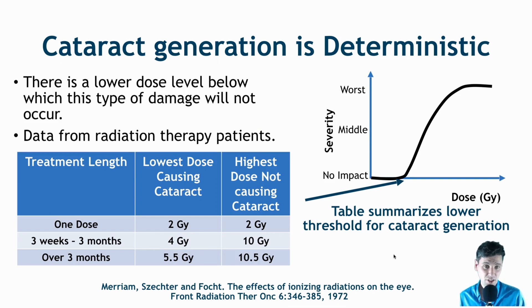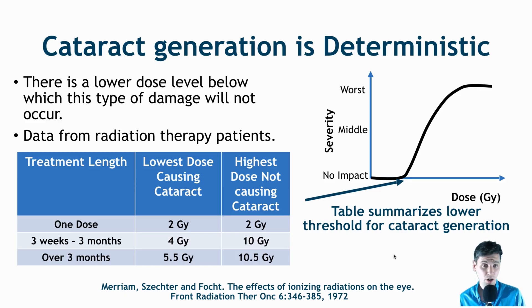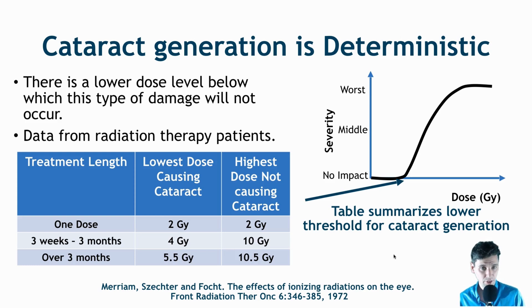Cataract generation is an example of a deterministic effect of radiation. As discussed in another video on stochastic versus deterministic effects, there is a lower dose threshold below which a deterministic effect will not have any impact. So if the radiation dose is very low, the deterministic effect will not kick in. For instance, at a very low radiation dose, you will not experience cataracts — there's a lower dose limit below which cataracts will not be induced.